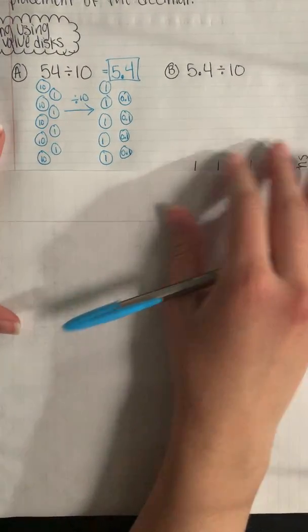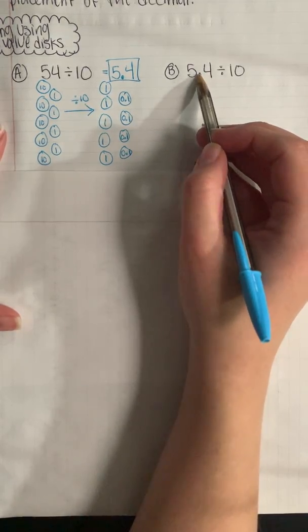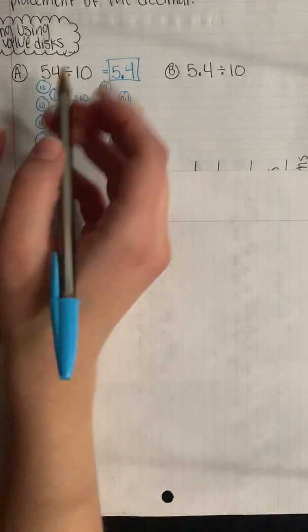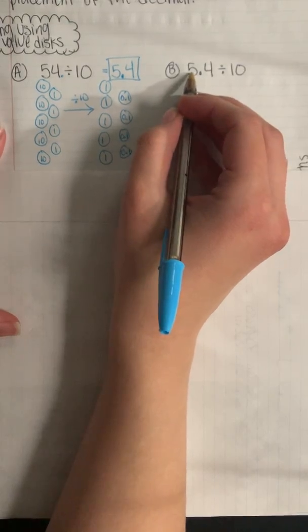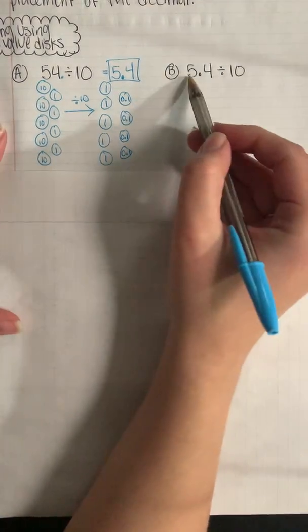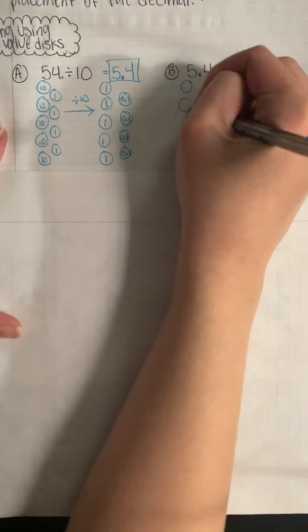Let's see how it's different with problem B, where we have the same digits, 5 and 4, but our decimal is in a different spot. In problem A, our decimal is really after the 4. Here it's in between the 5 and 4. So now I'm starting with 5 and 4 tenths, and I'm dividing that by 10. We would have 5 ones to start out with, and then I have 4 tenths — 0.1, 0.1. Here I have 5 and 4 tenths.